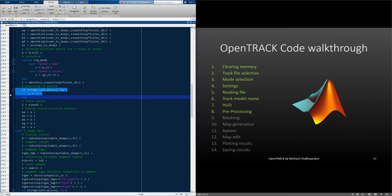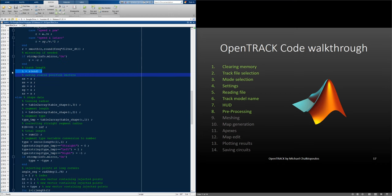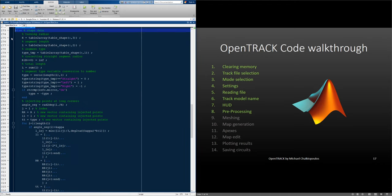Here, we mirror the curvature if needed. Then, we calculate the track length and save the old position vectors for use in the interpolation later. If we are in shape data mode, we start by converting the tables to arrays. We set all the radius values on the straights to infinity, calculate the track length, and convert the segment type variable to a number.